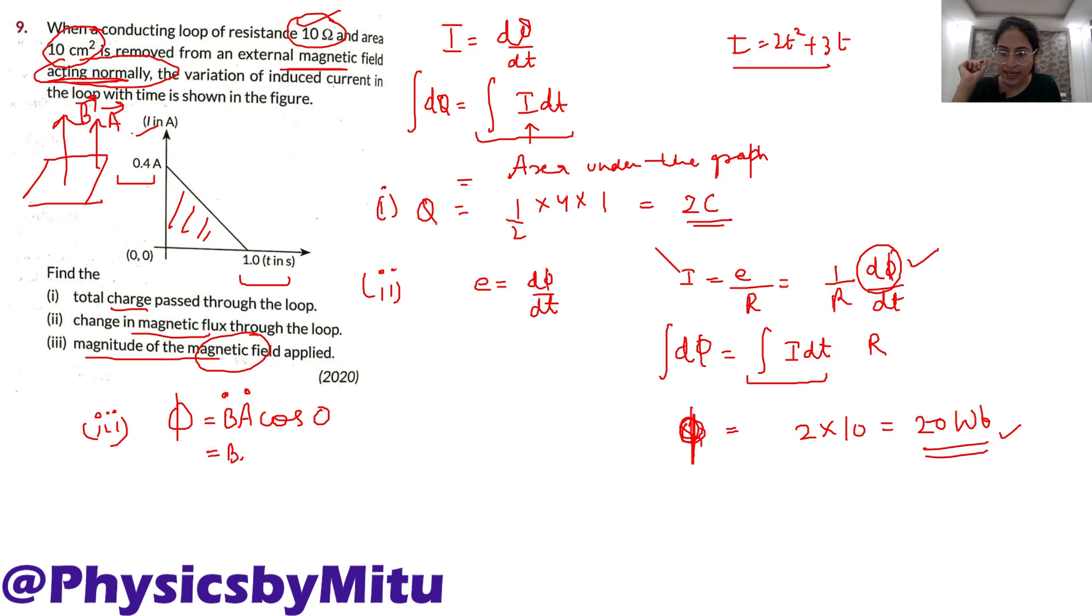B into A, you have to find B. So flux upon area, which is 20 Weber upon area hai, 10 centimetre square. So 10, 10 raise to the power minus 4 se multiply karo ga. Square it. So 20 upon 10, 10 raise to the power 4. Answer is 2 into 10 raise to the power 4.